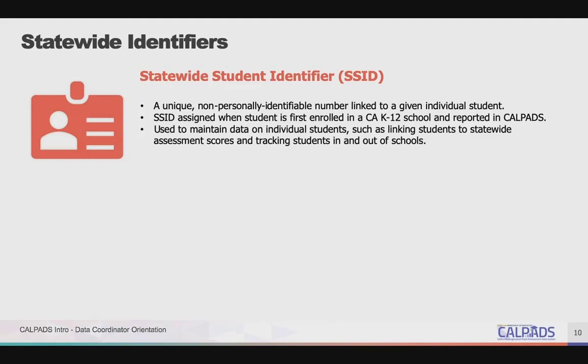Taking care to select the correct SSID up front will reduce the time needed to resolve problems later. We recommend that you adopt strategies to prevent errors, referred to as anomalies, which occur when a student has more than one SSID and when students share the same SSID. For more information on anomalies, we recommend that you participate in the training, which covers what anomalies are and how to resolve them.